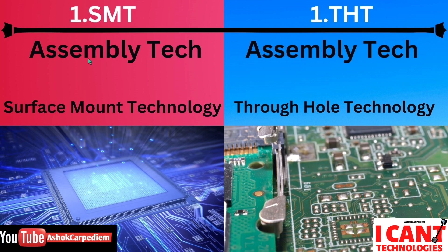First, we'll see the difference in the assembly technology. The first one is Surface Mount Technology and the second one is Through-Hole Technology. The difference is: if you are using Through-Hole Technology, you have to drill holes all over the PCB and connect the devices in those holes only. But for Surface Mount Technology, holes are not needed — components are mounted on the PCB directly. That is the difference between SMD and THT in assembly technology.